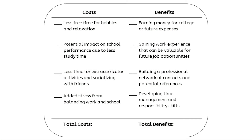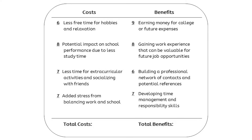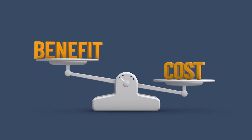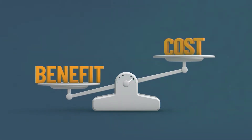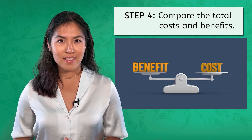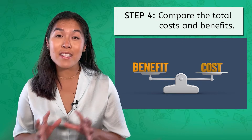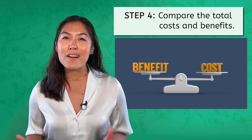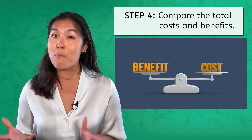Your numbers might be a little different from mine, and that's totally fine. I'm going to plug in my numbers here. You can see that I rated the potential impact on my school performance as the most important cost of getting a part-time job, with a score of 8. And earning money got the top spot for benefits, with a 9. But now I'm wondering: how do I weigh the overall costs and benefits against each other? Well, that's step four. Step four: compare the total costs and benefits. Just sum up the values you gave to each cost and benefit. Hit pause on the video and add up your total scores for both costs and benefits if you haven't already.